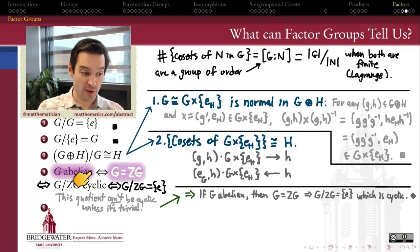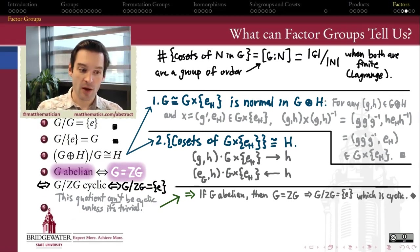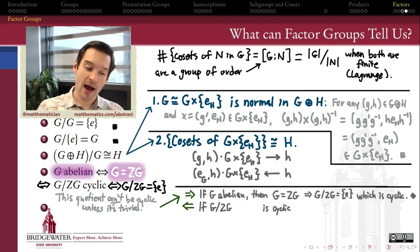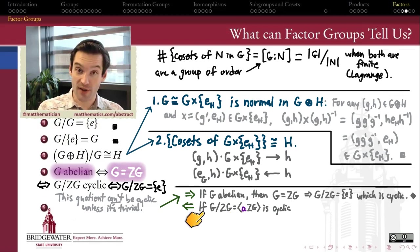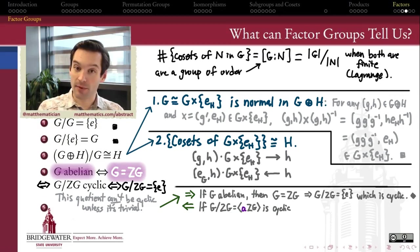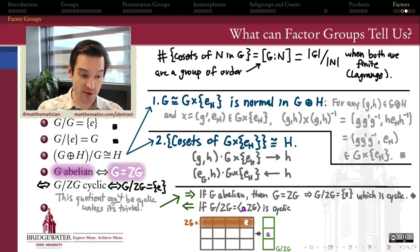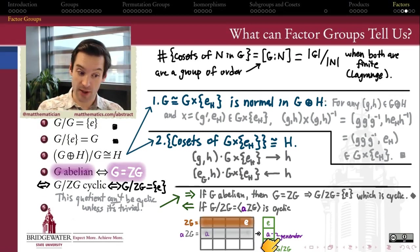Any abelian group is going to have its quotient by its own center be cyclic, because that quotient is the trivial group. Now, what about going the other way? If we happen to know that G mod Z(G) is a cyclic group, how do we prove that G must have been abelian? Let's think about this quotient being a cyclic group generated by an element. The elements of a quotient group are cosets, so I'm going to pick a coset of Z(G), call it aZ(G), and that's going to be the element which generates G mod Z(G).